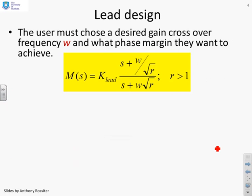So the user must choose a desired gain crossover frequency omega and what phase margin they want to achieve. And we're going to use this definition of a lead. You'll see it's got a gain k lead, and then it's got a frequency omega, and then it's got this r. And r basically tells you how much phase uplift you're going to get from your lead.